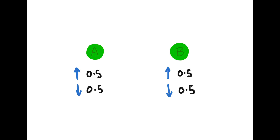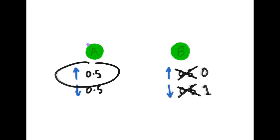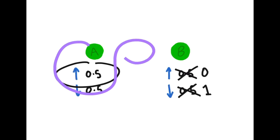Before measurement, each particle has a 0.5 chance of having either spin. After measuring particle A to have up, you know particle B will have spin down. The probability of B being up becomes zero and down becomes one. Information about one electron conveys information about the other — they are entangled.